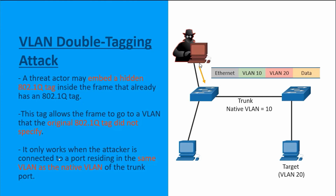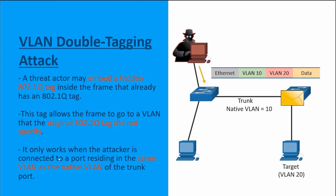With the attacker currently being on VLAN 10, they're going to build a frame that's going to have an external VLAN header of VLAN 10, and then an internal tagged VLAN of VLAN 20. When that message is sent up to the first switch, our first switch is going to see the external outside header of VLAN 10, strip that off, and then send this traffic on its way to any device running in VLAN 10. The switch sees that VLAN 10 is also the native VLAN, so it's going to remove the VLAN 10 header and move it across the trunk link.